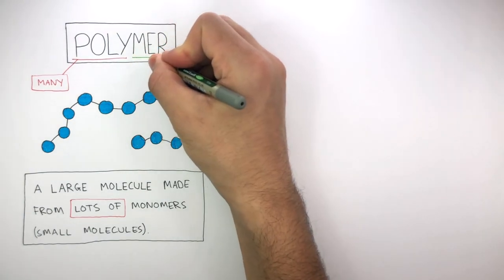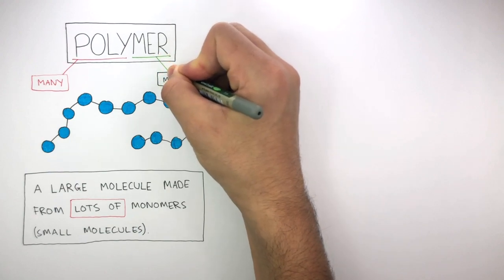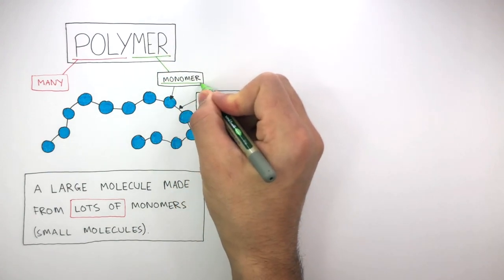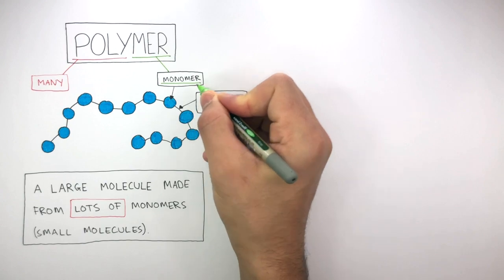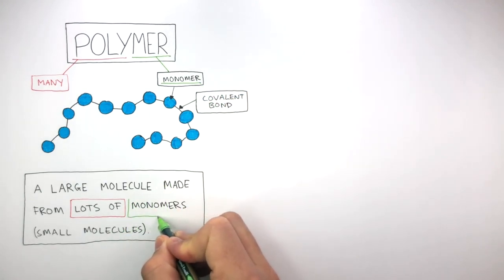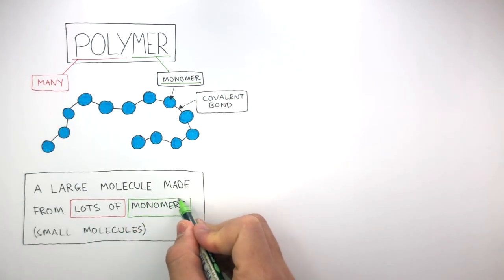And the suffix mer in polymer just means monomers or molecules. So when we look at the definition which includes the words monomers, we can see how a polymer is just a large molecule made from lots of monomers.